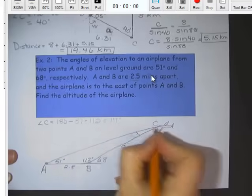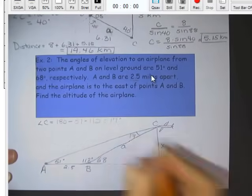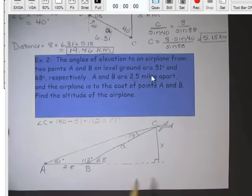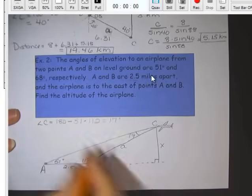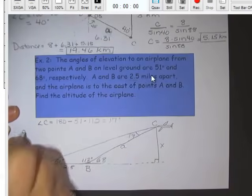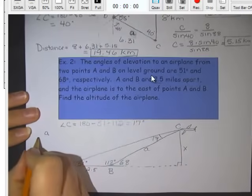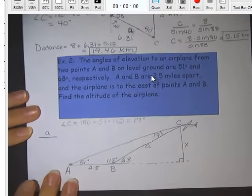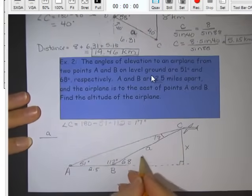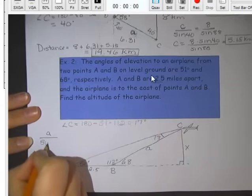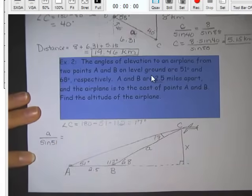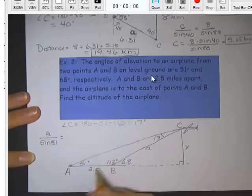And so now we want to use our law of sines. And I'm looking for little a, so like I said, always start with what you're looking for on top. If it's an angle, you would start with the sine of A on top. But A over the sine of 51 equals C, which is 2.5, over the sine of C, 17.